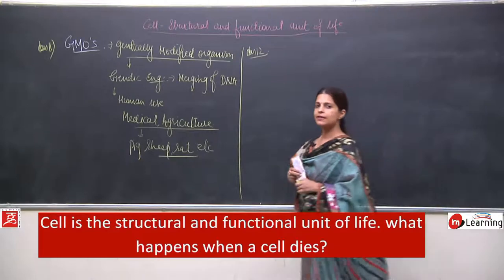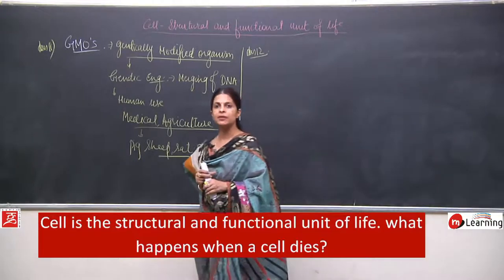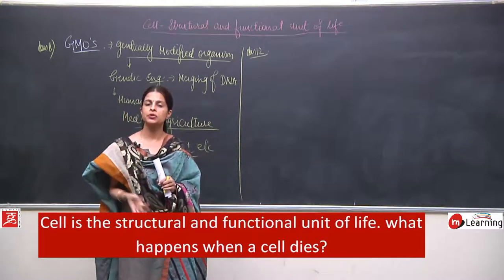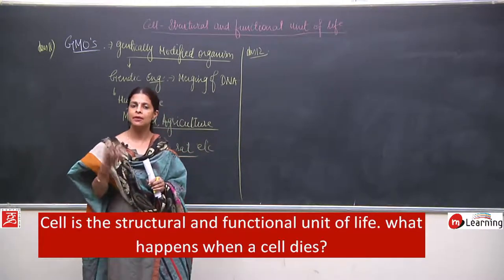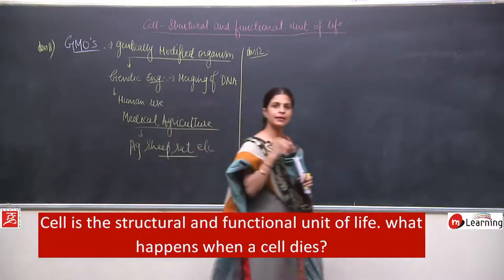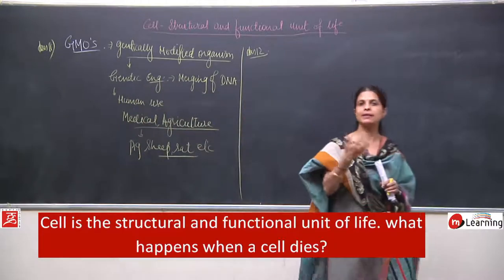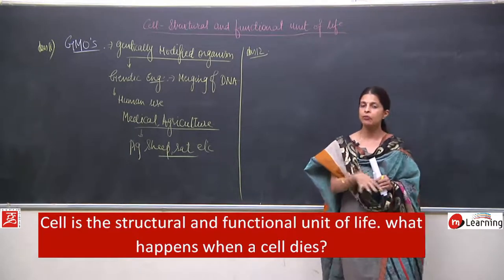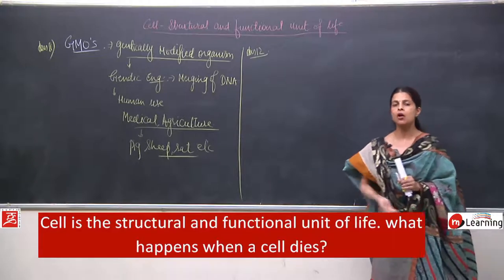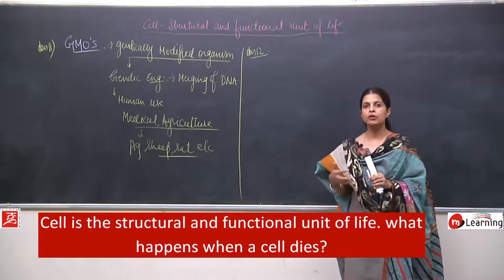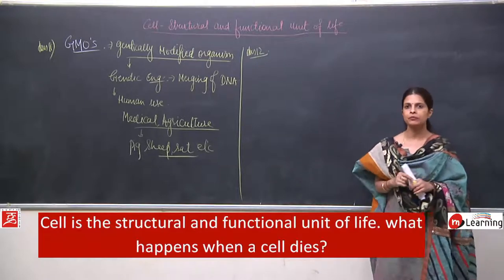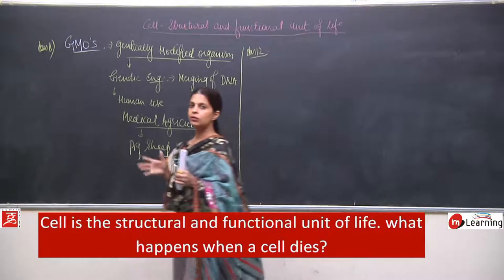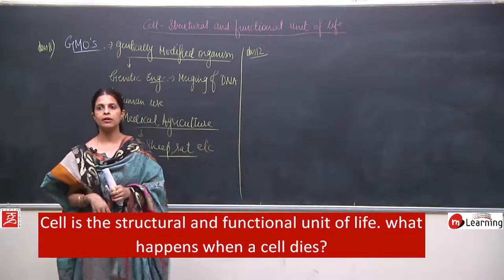When a cell is removed from certain tissues, it is able to survive. But when organelles like mitochondria or Golgi bodies are removed from the cell, these organelles collapse and are not able to survive independently. That is the reason cells are known as the smallest living part of any organism.